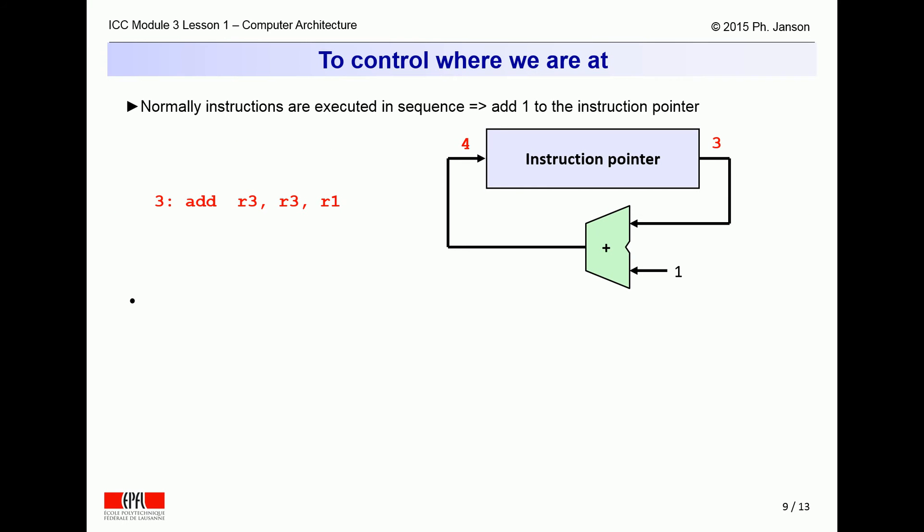Now under normal circumstances, such as after the add into R3, the sum of R3 and R1 instruction, the computer should proceed to the next instruction at line 4. So the instruction pointer must be equipped with a mini arithmetic unit capable of adding one to it after every instruction.